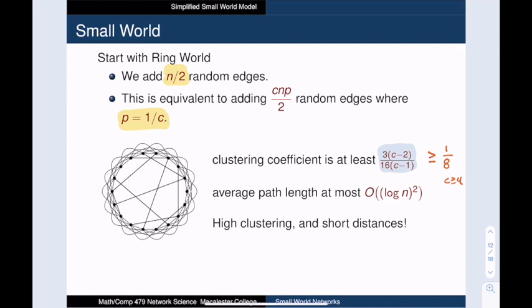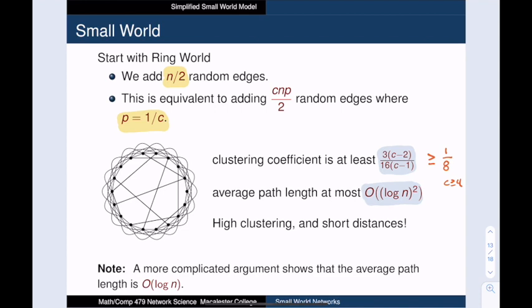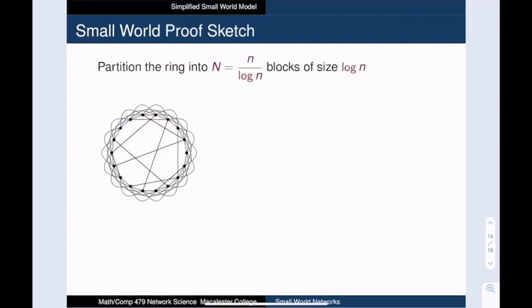Meanwhile, the diameter has become small. We will sketch an argument that the average path length is order log n squared. A more detailed analysis actually shows that diameter is order log n. But we'll favor simplicity over best possible for this introductory video. We have added n over 2 random shortcuts to our ring world. Next, we are going to partition the ring into blocks of size log n. And we are going to treat these blocks as mega vertices in an Erdos-Renyi random graph on N vertices, where N is equal to n over log n.